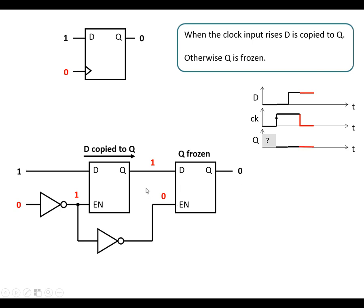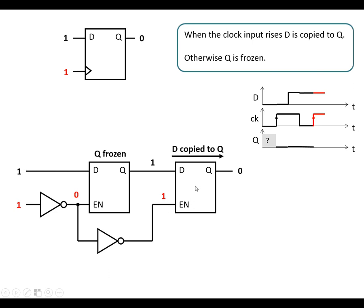Now we change the clock input high again. The first latch is frozen, so the 1 that was in the middle gets frozen there. Inverting the clock gives a 1, so the second latch is now enabled — D is copied to Q, and the 1 gets copied across to the output. If we then change D, it's not going to get past the first latch, so it's not going to be able to change the output.